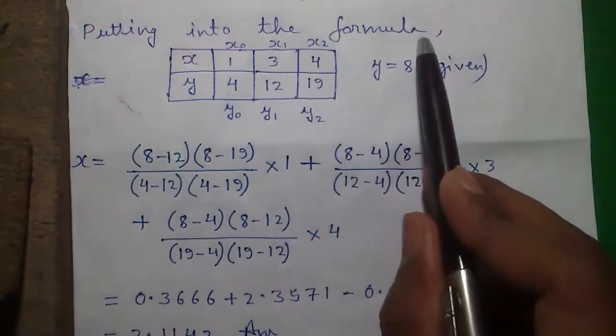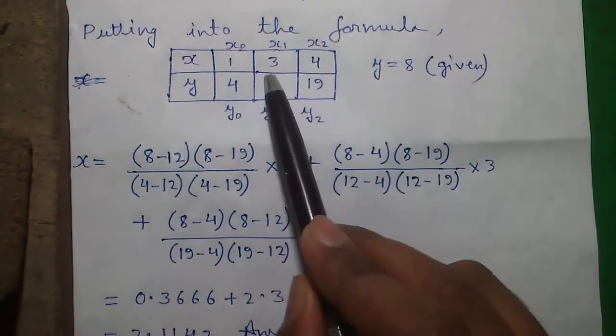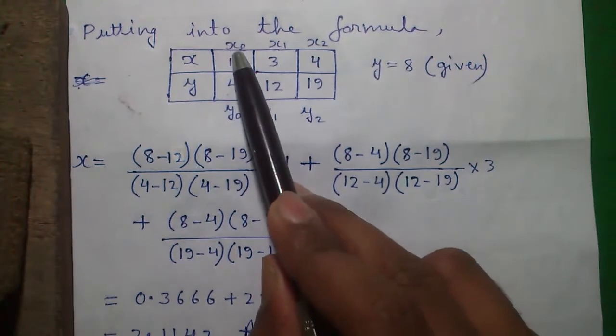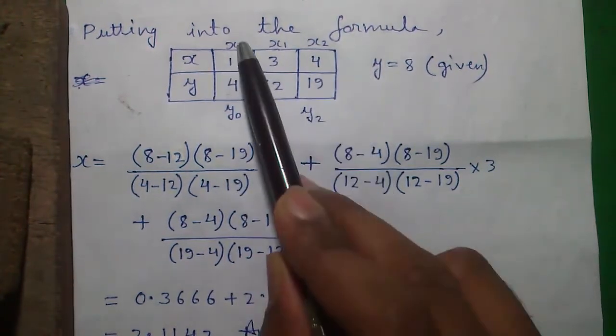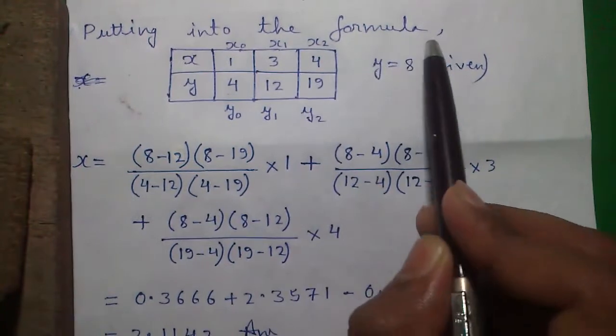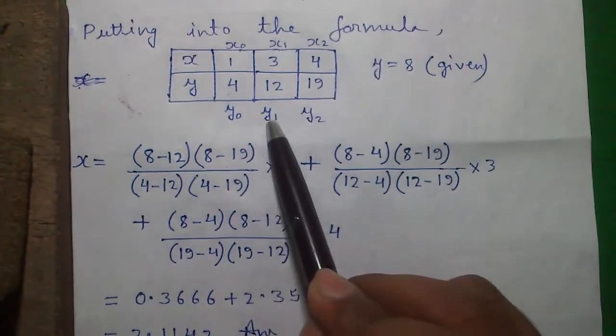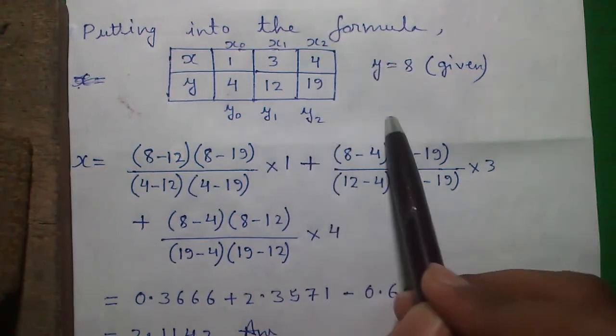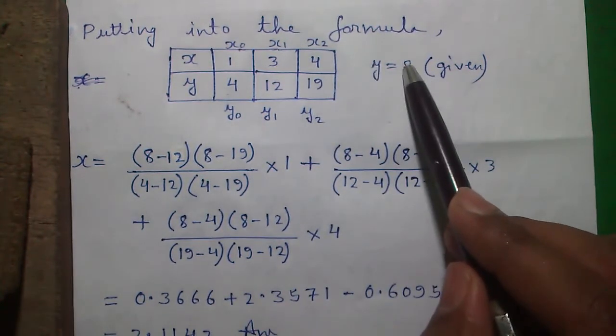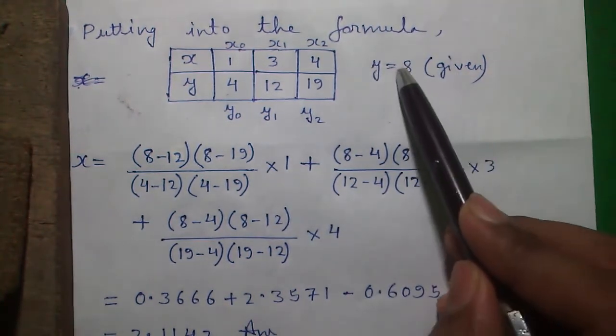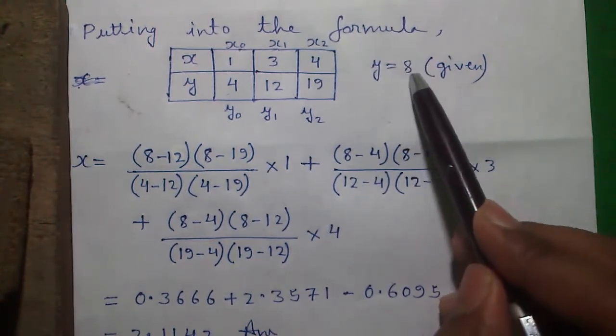And now putting into the formula, I have rewritten the question here. The first value in x row is called x0, next x1, x2 and so on. Similarly in y row the first term is y0 and next y1, y2 and so on. And y is 8 given. That means we have to find out value of x for y equals to 8.